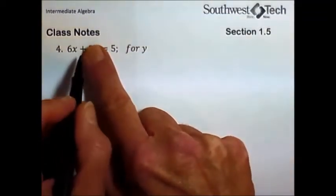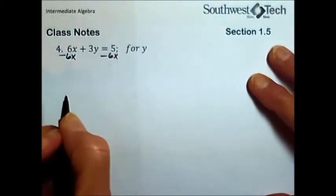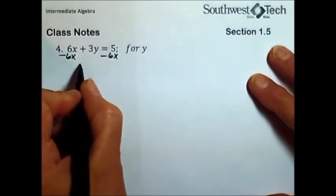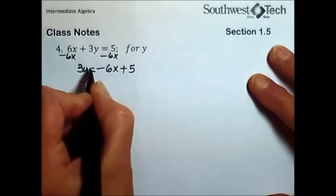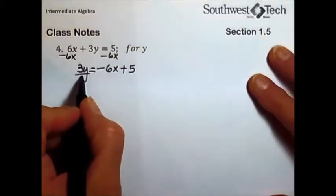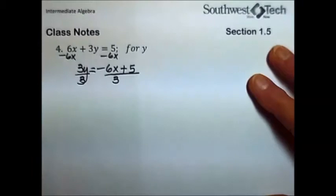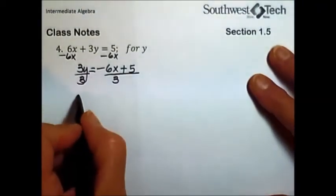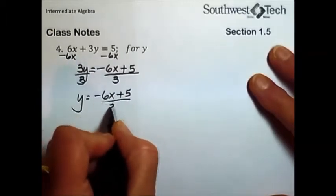This really isn't any different than what we've been doing solving equations so far in this course. We identify what's happening to the variable. It's being increased by 6x, so we will subtract 6x from each side. They cancel out on the left, leaving 3y, and we have minus 6x plus 5 on the right hand side. You may have been thinking 5 minus 6x, either one of those would be acceptable.